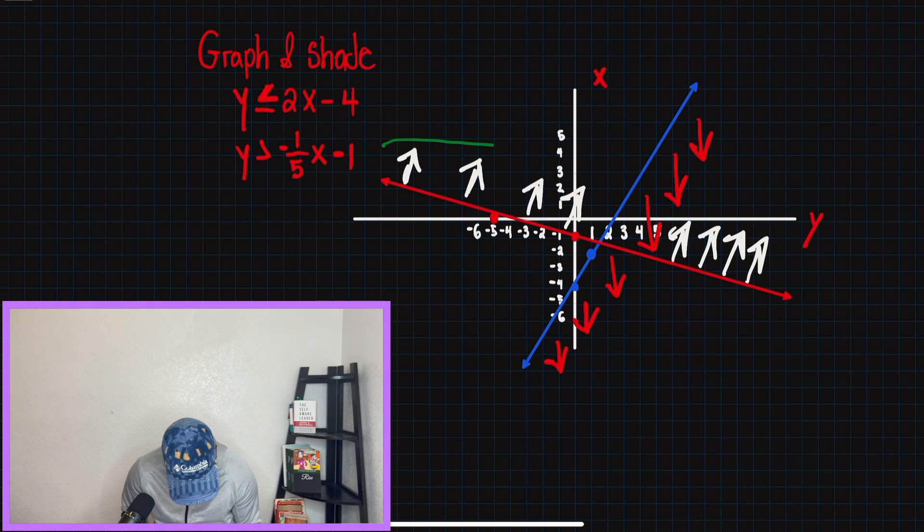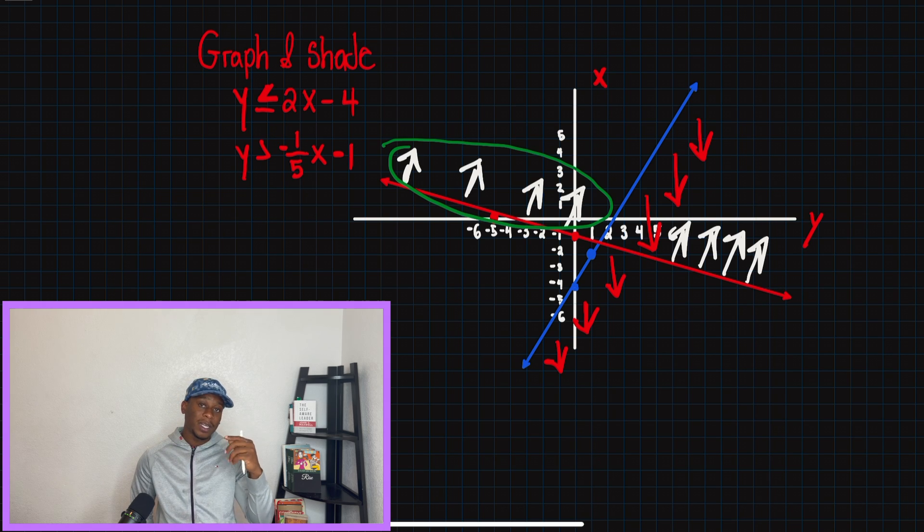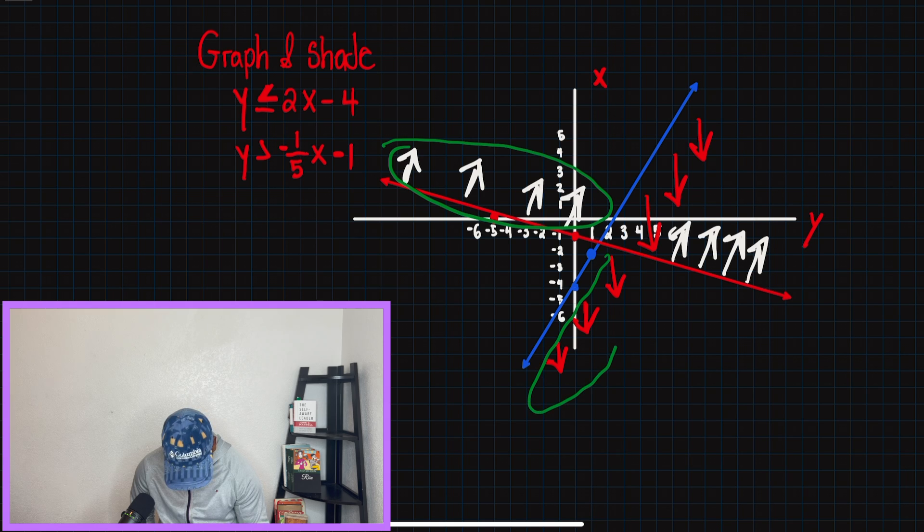So when we look over here, when we circle that first group, that only satisfies one of the inequalities. So we know that that's not the region we want to shade. When we look at the second set of arrows for our first line, this only satisfies one set of the equations and inequalities.